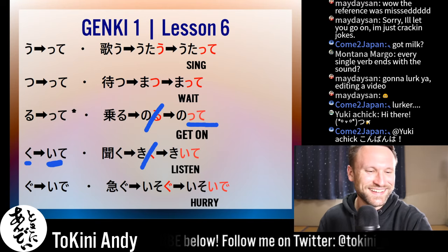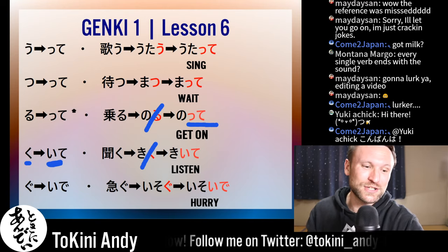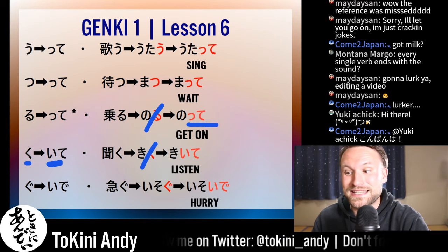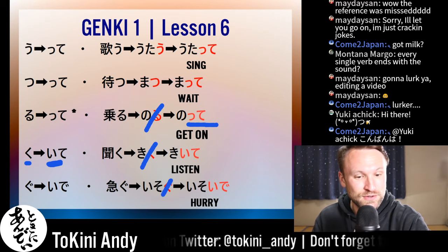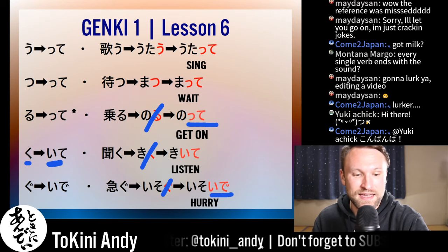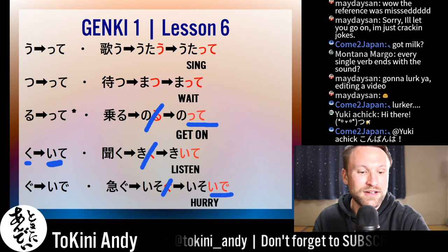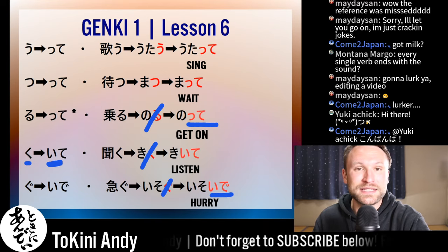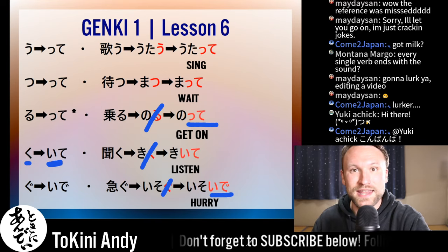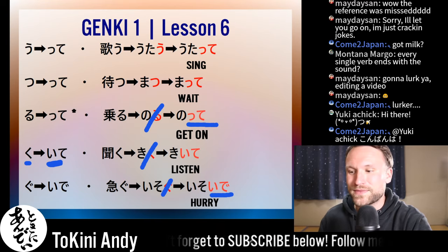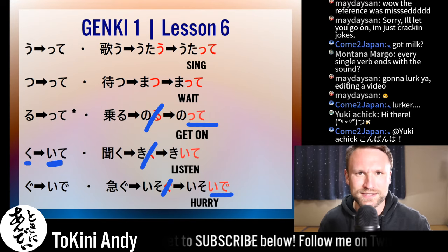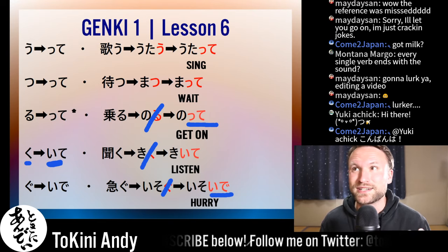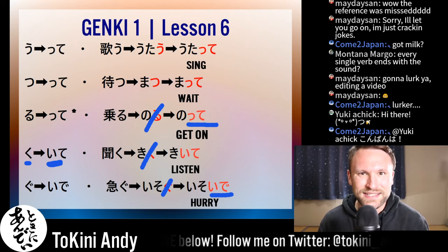Gu verbs are very similar to ku verbs, except the 'te' becomes 'de.' So you cut the 'gu' and it becomes 'ide' instead of 'ite.' Our verb for today is 'to hurry,' which is 'isogu,' and it becomes 'isoide.' Isoide — hurry up!